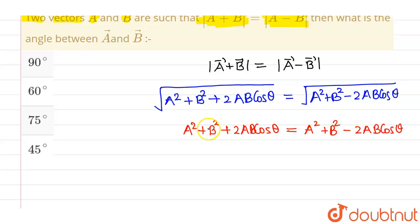A square plus B square will cancel out with this another A square plus B square and overall I will be getting 4AB cos theta to be 0.